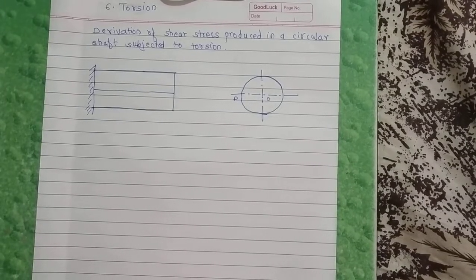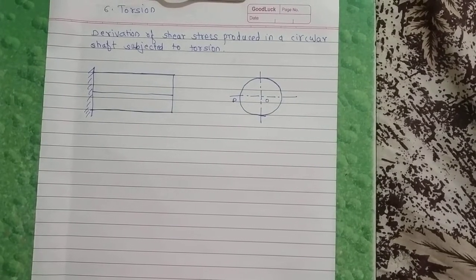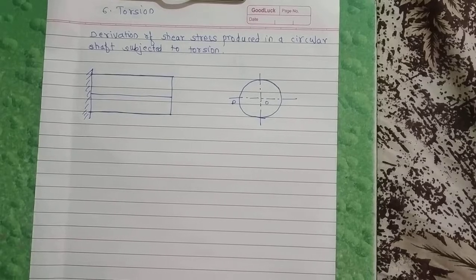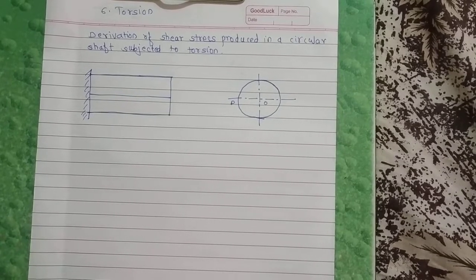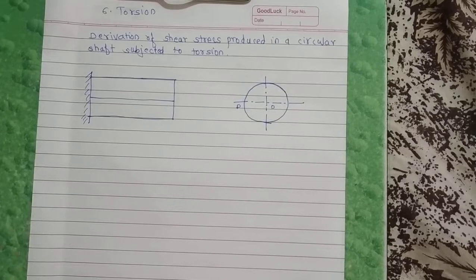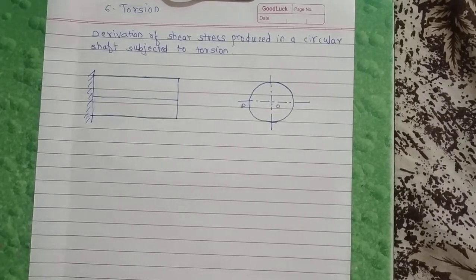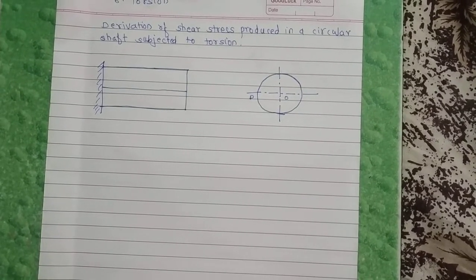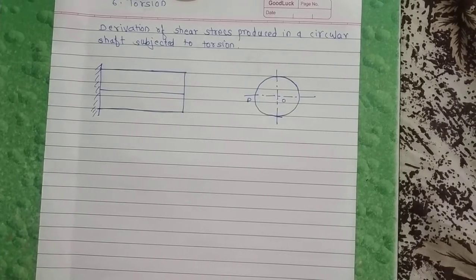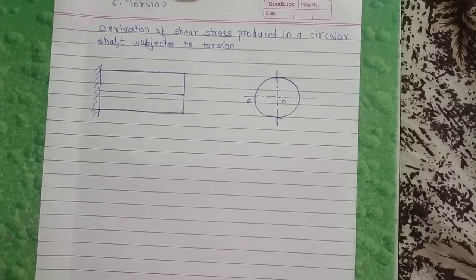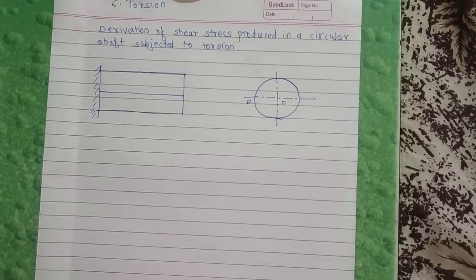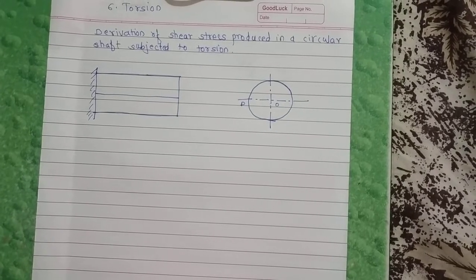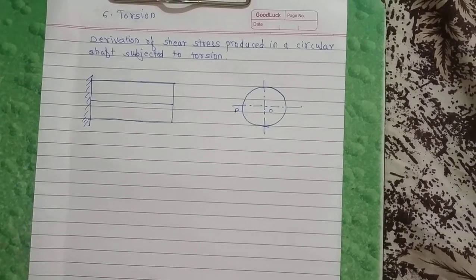Welcome students. Today we are going to see Unit 6: Torsion. A shaft is said to be in torsion when equal and opposite torques are applied at the two ends of the shaft. The torque is equal to the product of the force applied and the radius of the shaft. The force is applied tangentially to the ends of the shaft. Due to application of these torques, the shaft is subjected to a twisting moment, and because of that, shear stresses are produced in the material of the shaft.